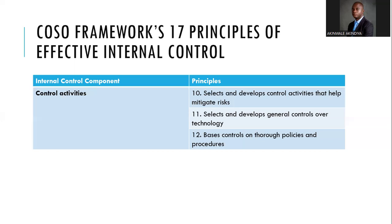Principle eleven: select and develop general controls over technology. Technology risk is essentially a baseline for almost all organizations today since we are all dependent on technology, so we need controls to manage technological risks. Principle twelve: base controls on thorough policies and procedures. Policies and procedures are often considered the first line of defense — they describe the controls you implement based on your risk assessment. You need up-to-date policies and procedures. Principles ten, eleven, and twelve map to control activities.